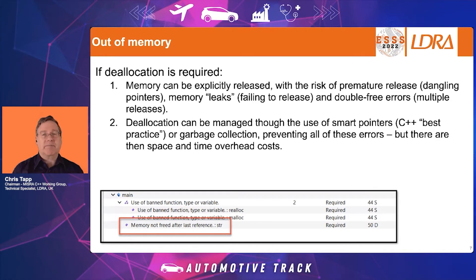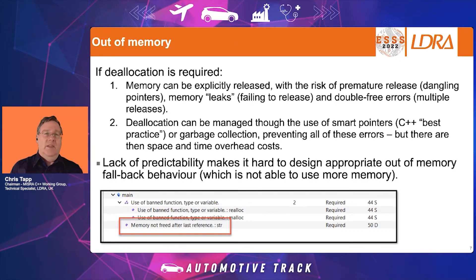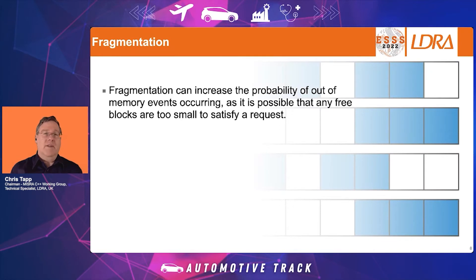You can have unique pointers or shared pointers. There are, however, some code and runtime costs associated with smart pointers that also need to be taken into consideration. The real problem is this lack of predictability when memory may run out, which makes it hard to design appropriate out-of-memory fallback behavior, because we don't know if we're going to have enough for one object or a thousand objects — it becomes much more difficult to design suitable fallback behavior.